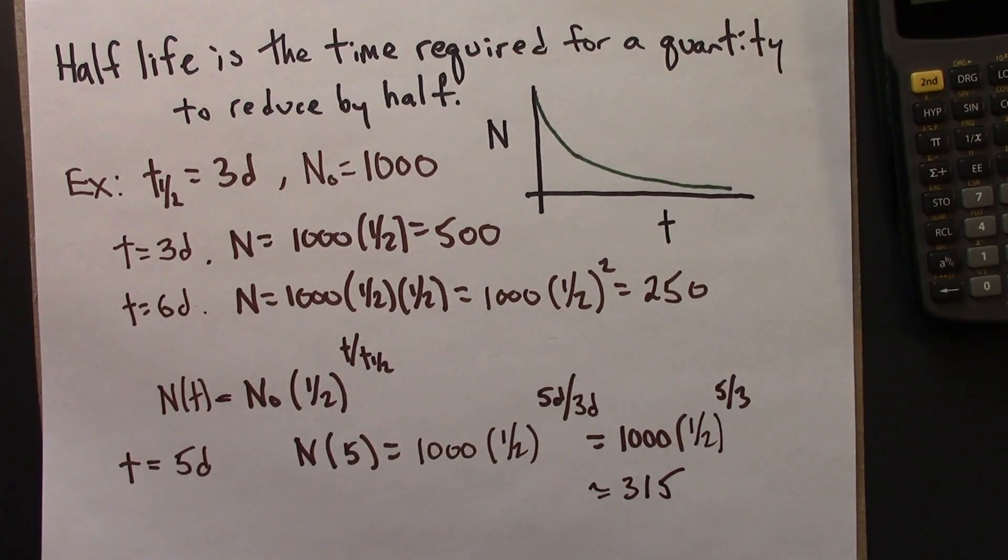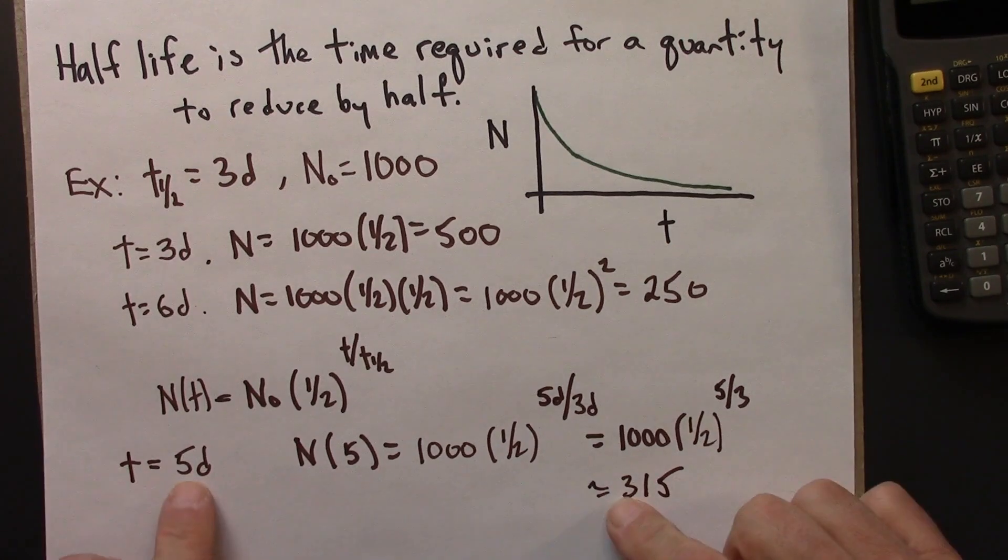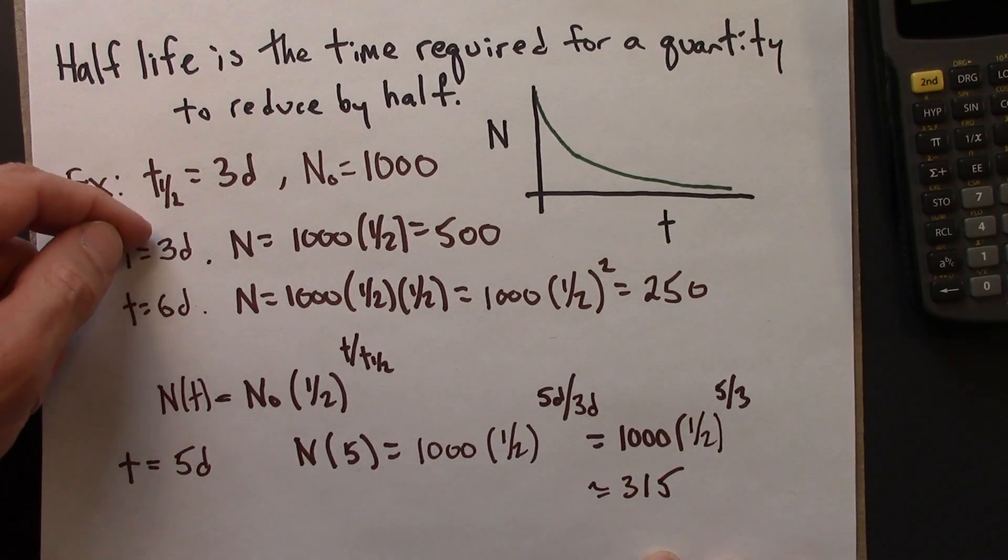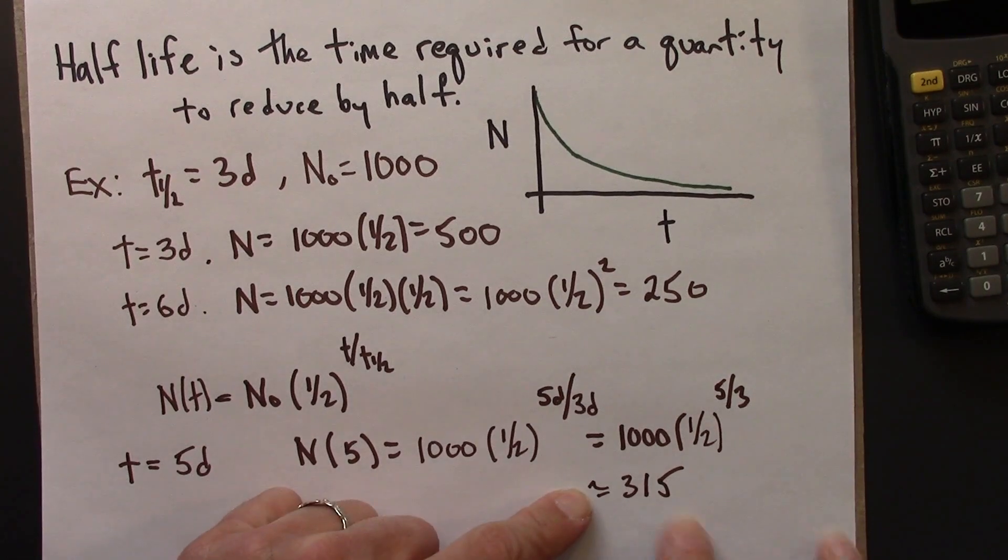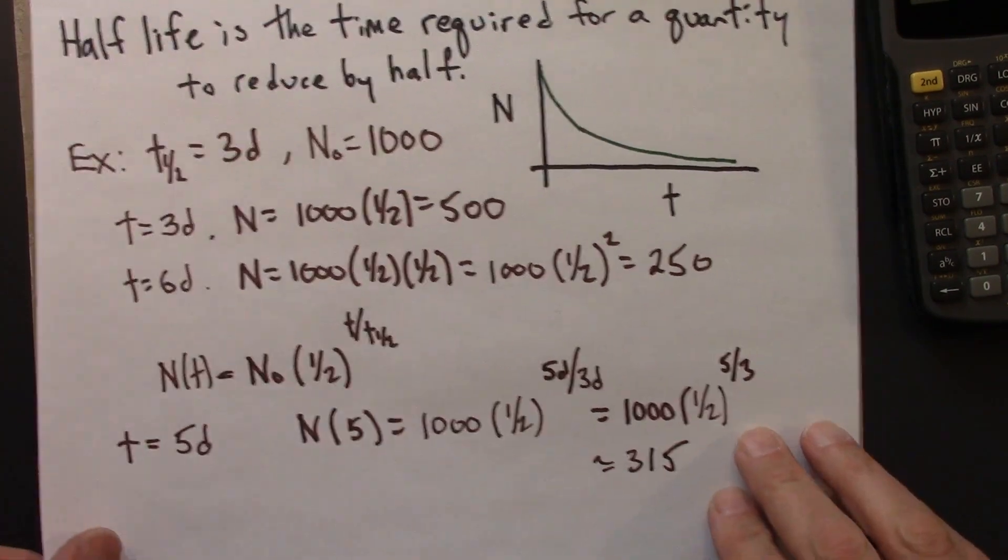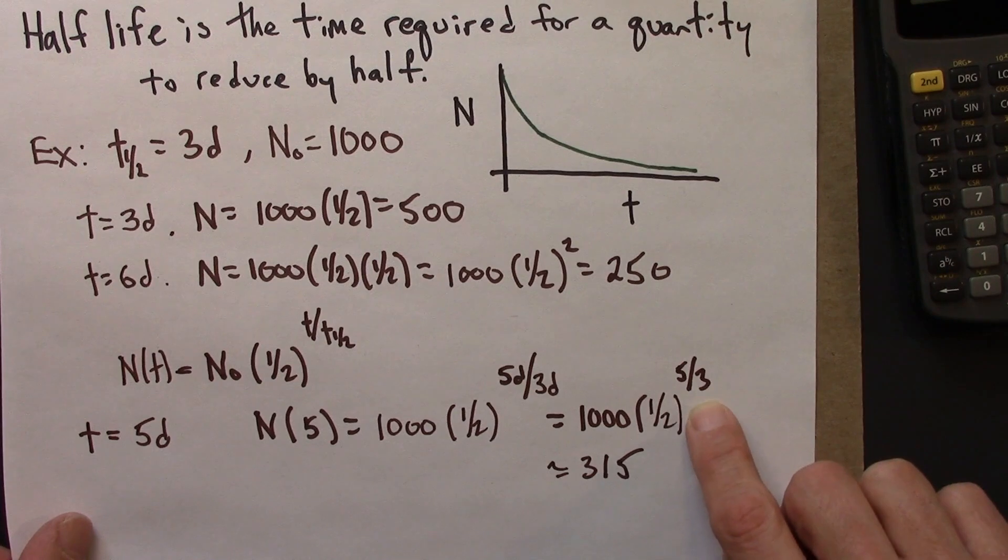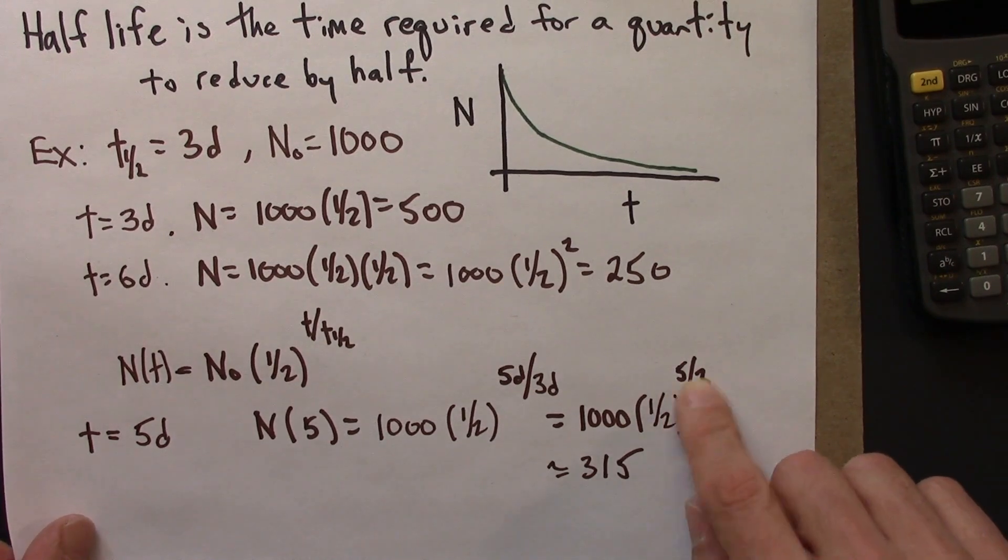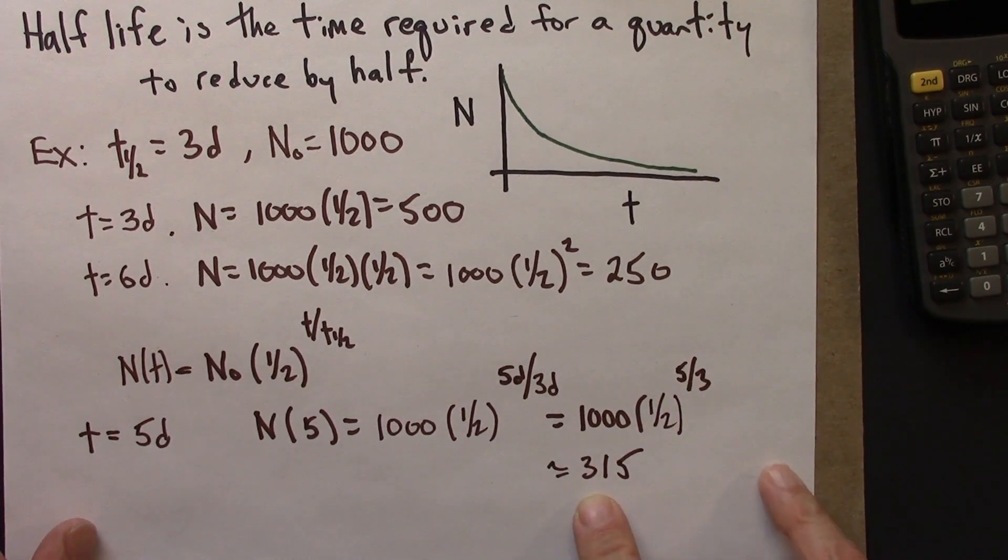So that makes sense. We'd expect a number for 5 days in between the 3 and the 6 day amount, and indeed, that's what we get. You might want to check just to make sure that you know how to do this on your calculator. You might want to check that you get the same result that I do.